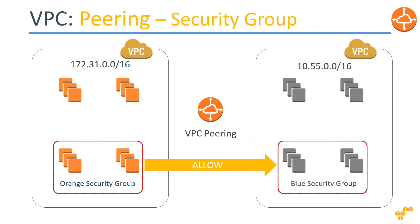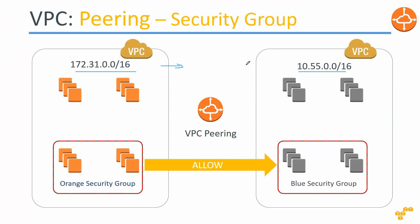These are the steps needed for a VPC peering connection to work. First, your subnet or VPC CIDR ranges cannot overlap. In this example, one side is in the 172 series and the other is in the 10 series. If they have overlapping ranges, the routing table on the VPC router won't know whether traffic is inside or outside, so you cannot pair overlapping IP addresses.